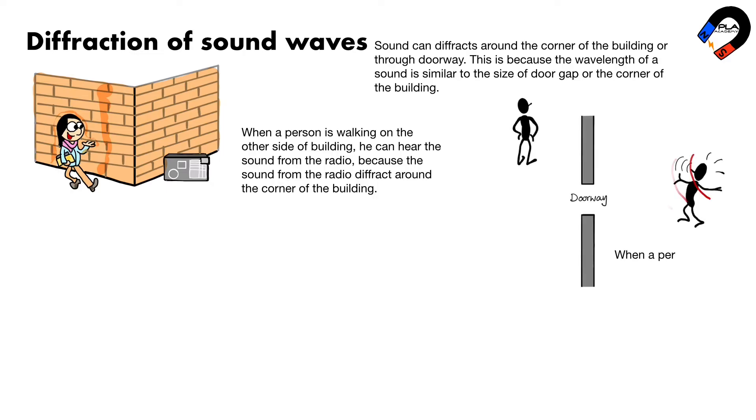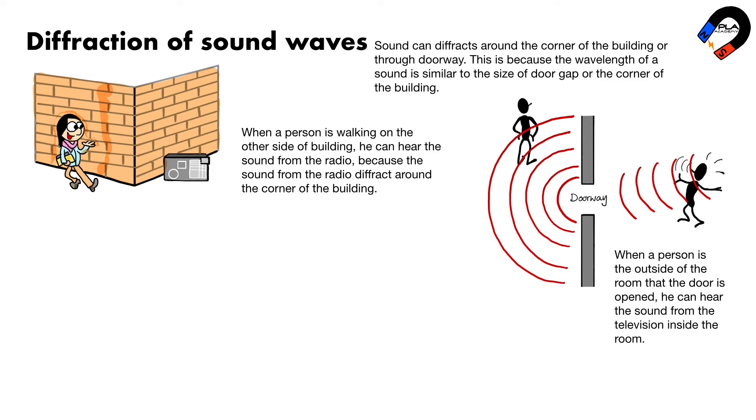When a person is the outside of the room that the door is opened, he can hear the sound from the television inside the room. This is because the sound can diffract through the doorway.